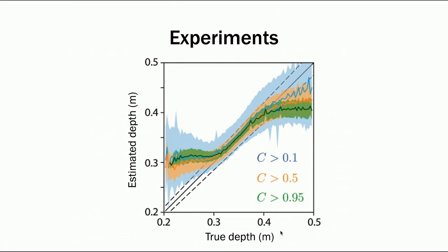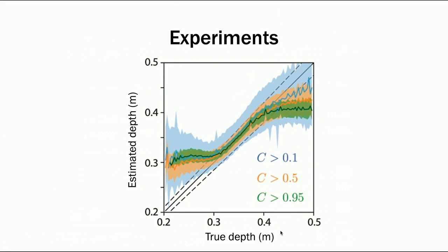Quantitatively, the higher the confidence value, the higher depth accuracy is, and the sparser the depth map would be. For a confidence value that is used in our experiment, c greater than 0.5, the system could predict depth from 30 to 40 centimeters with about 5% relative error.